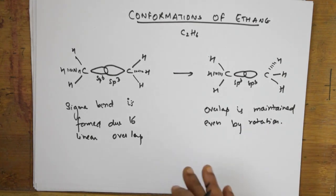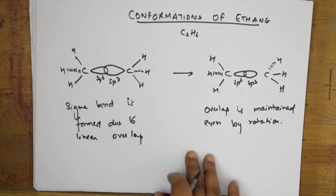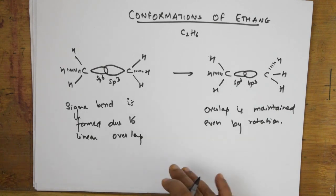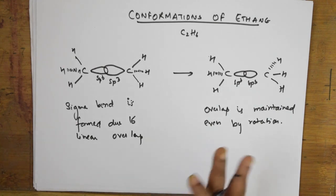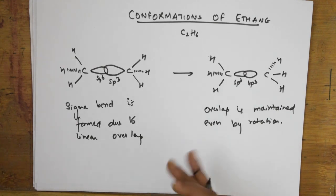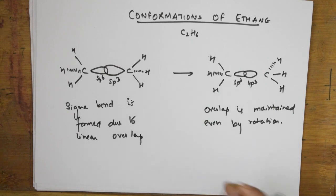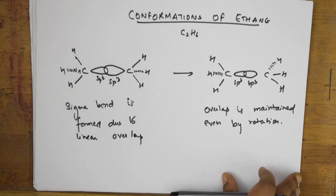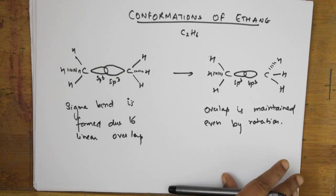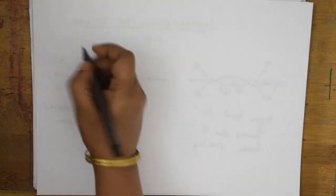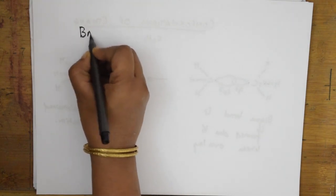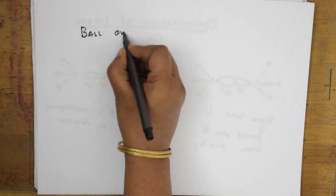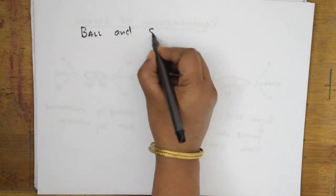Welcome to one more session of general organic chemistry. In previous videos I have clearly explained sawhorse projection, Newman projection, skew confirmations, dihedral angle, torsional strain, torsional energy, and the stability order of staggered, Newman, and skew conformations — with staggered being the most stable and eclipsed least stable.